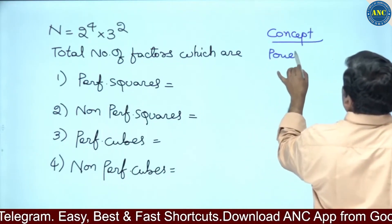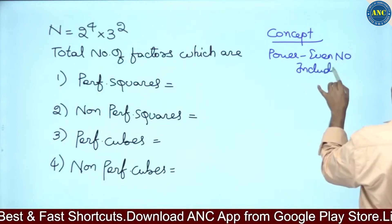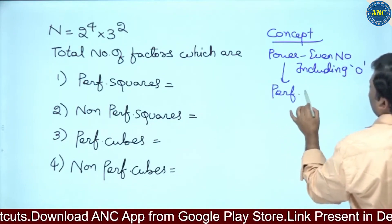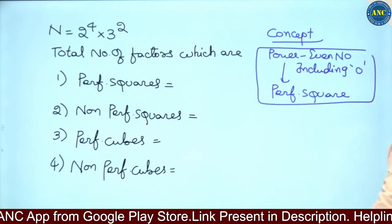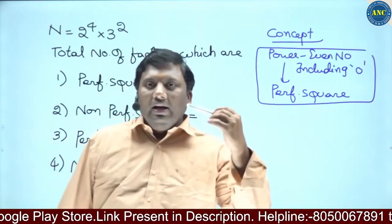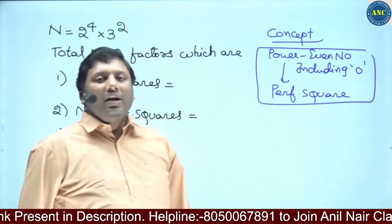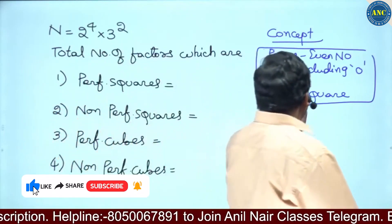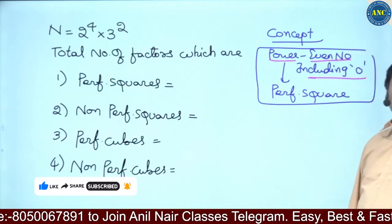If the power of any number is an even number, including zero, then the number is called a perfect square. For example, 16 is a perfect square — it can be written as 2⁴ (4 is even) or as 4². If you can write a number where the power is an even number including zero, then it is a perfect square.